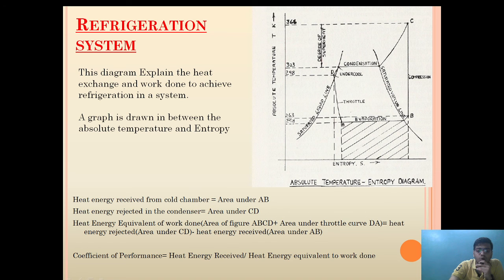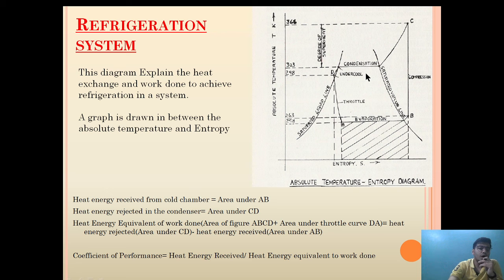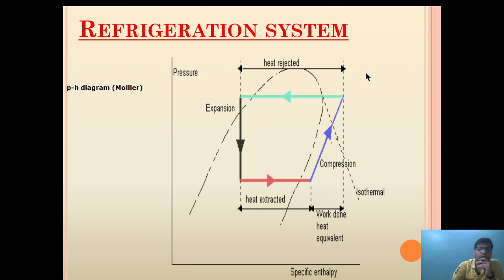If anyone asks you what is the coefficient of performance, you can say in simple terms it is the heat energy received divided by the heat energy equivalent to work done. Looking at the pressure and enthalpy graph, this one is the heat rejected, this one is the compression, this one is the heat extracted, and this one is the expansion.